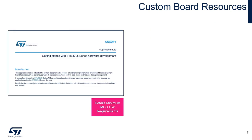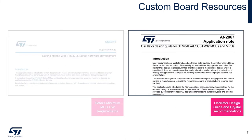When working on a custom board design, there are two application notes to keep handy. The first one is the Getting Started with STM32 Series Hardware Development Application Note. This application note provides guidance for certain hardware characteristics and includes several reference designs. Please check for the correct AN under your Micro's Document tab, as each series has its designated hardware development guide.